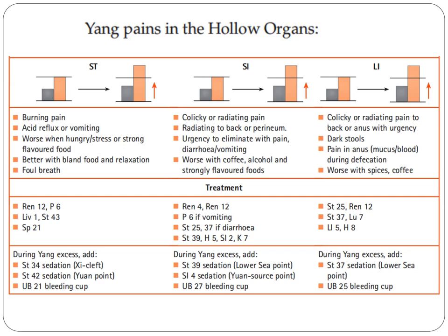Treatment: Stomach 25, REN12, Stomach 37, Lung 7, LI5, and Heart 8. During yang excess, add Stomach 37 sedation — the lower He-sea point of the large intestine — and UB25, bleeding cup.